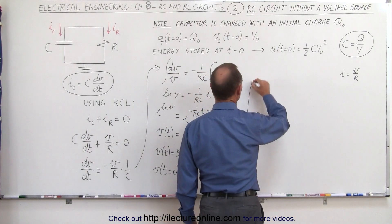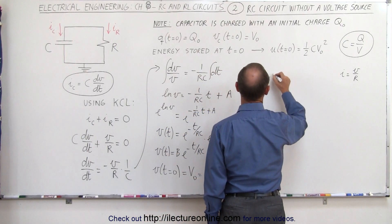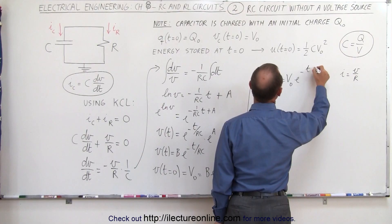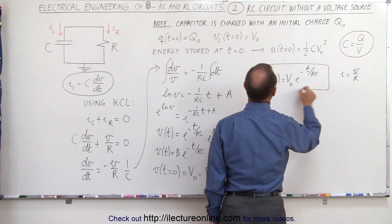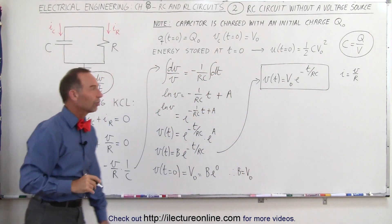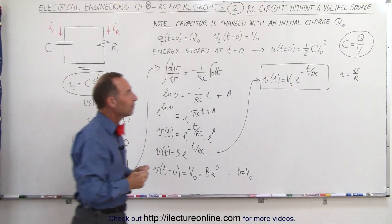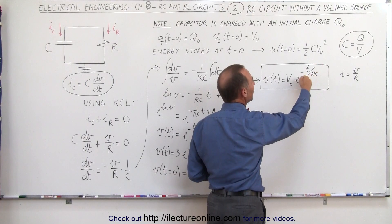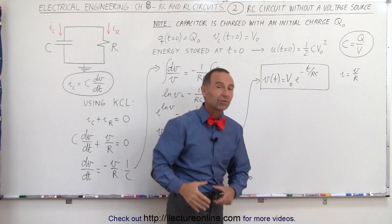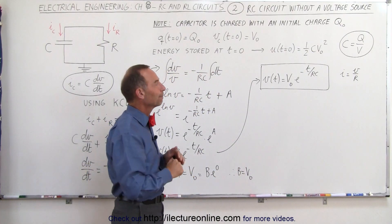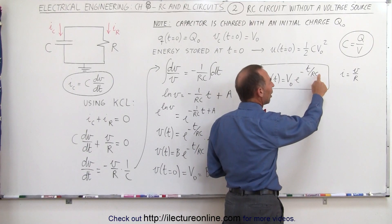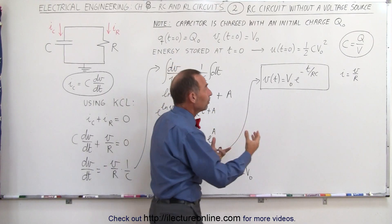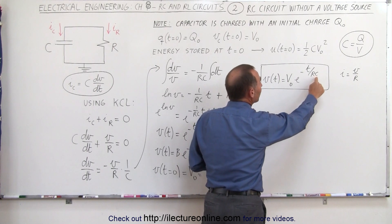Plugging that into the equation, we can say that the voltage as a function of time equals the initial voltage V sub nought times e to the minus t over RC. That is the general solution to a simple RC circuit — the voltage across the capacitor as a function of time. Notice that when time equals zero we get the initial voltage, and as time increases to infinity, e to the minus infinity becomes zero, so the voltage across the capacitor goes to zero over time. How fast that happens depends on the values of R and C.